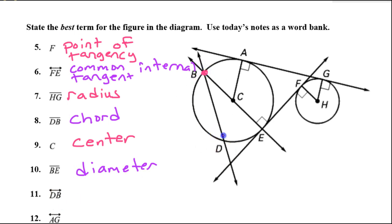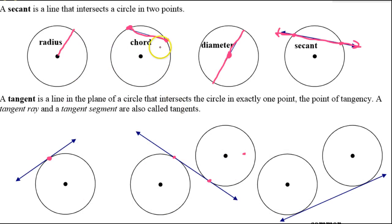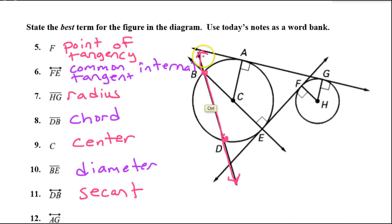Line DB — here's B and here's D. Line BD is going to be a secant. Remember, the only difference between a chord and a secant is that a chord is a segment that begins and ends on the circle, while a secant is a line. It passes straight through the circle and keeps going in both directions. See the line symbol? It's a line — it keeps going forever. That makes it a secant.